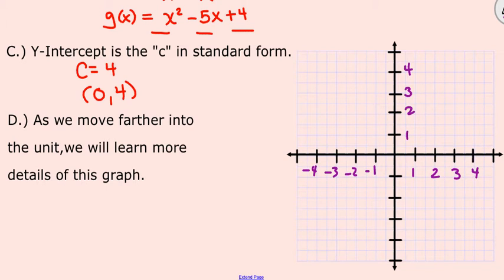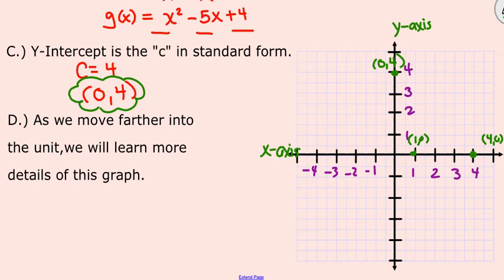Now we're going to graph our x-intercepts. Remember our x-intercepts were at 4, 0, and 1, 0. So those are our x-intercepts that touch on the x-axis. The next thing I want to graph is our y-intercept. That is the c in standard form. So that's over 0, up 4. Now we have three points, our y-intercept, and then our two x-intercepts.